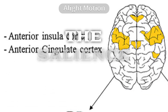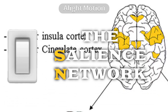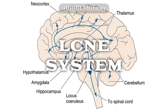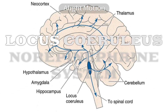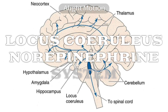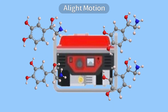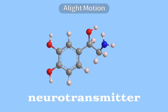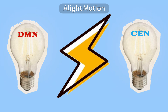Next is the salience network, SN, which is like the switch choosing which bulb should shine. The LC-NE system, the locus coeruleus norepinephrine system, acts as the power generator. It releases norepinephrine, a neurotransmitter that acts as the electricity that keeps the lights running.